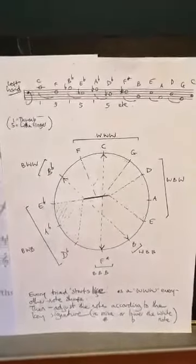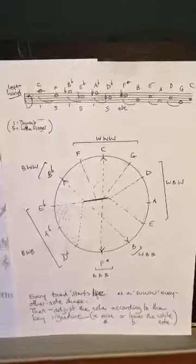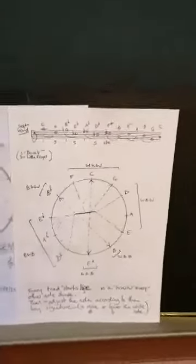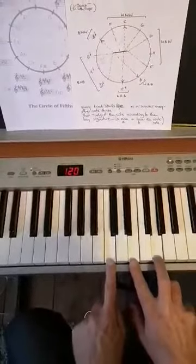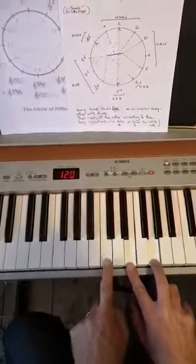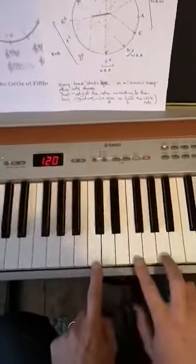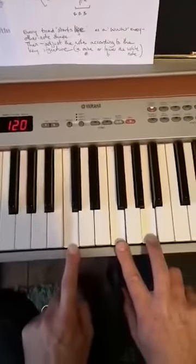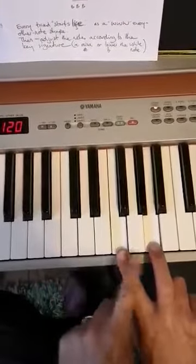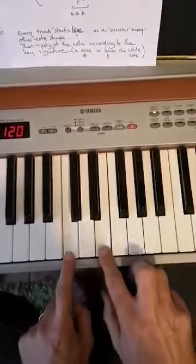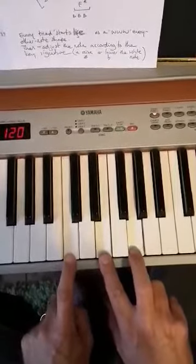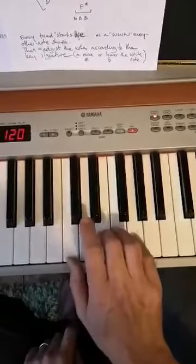First of all, I suppose it's worth saying that every major chord in what's called root position is an every other note shape. So let me just show you on the keyboard. That is what I would call an every other note shape. It's just missing out a note. That is not an every other note shape because here we've got a big gap. So when I say an every other note shape, I mean three notes arranged like that. That's what's called a root position triad.